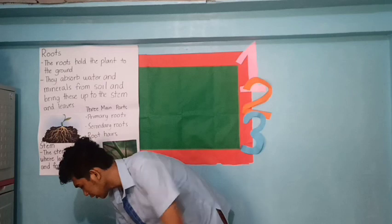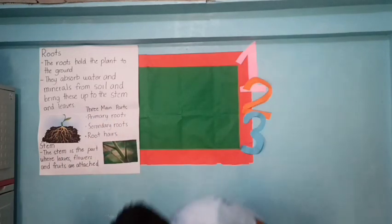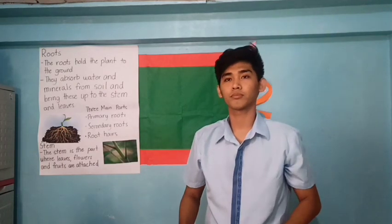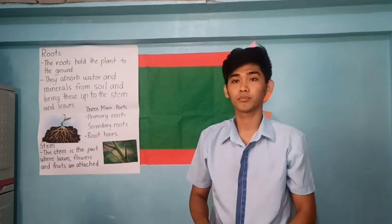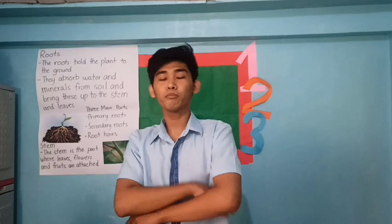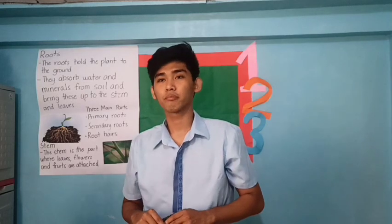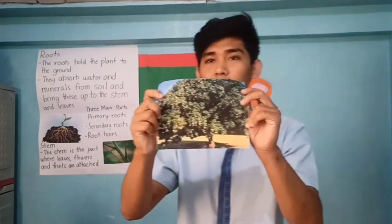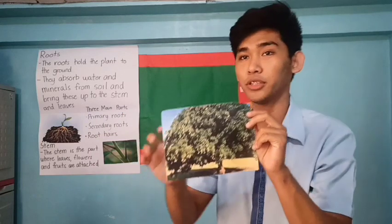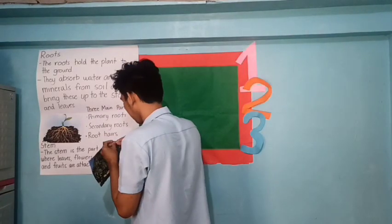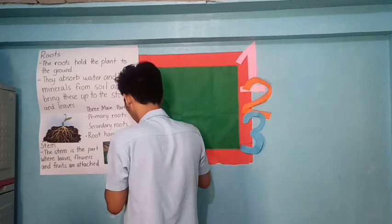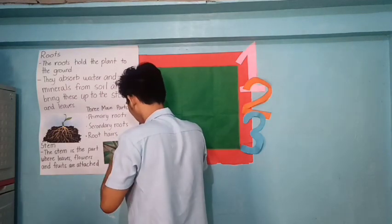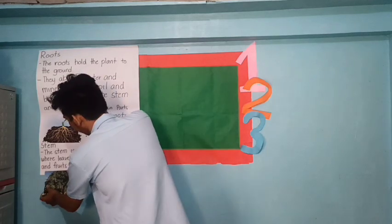Let's go to trees. Trees are tall plants with big stems called trunks. Some examples of trees are mango trees, acacia, and tamarind. I have prepared an image here — this is an example of a mango tree.